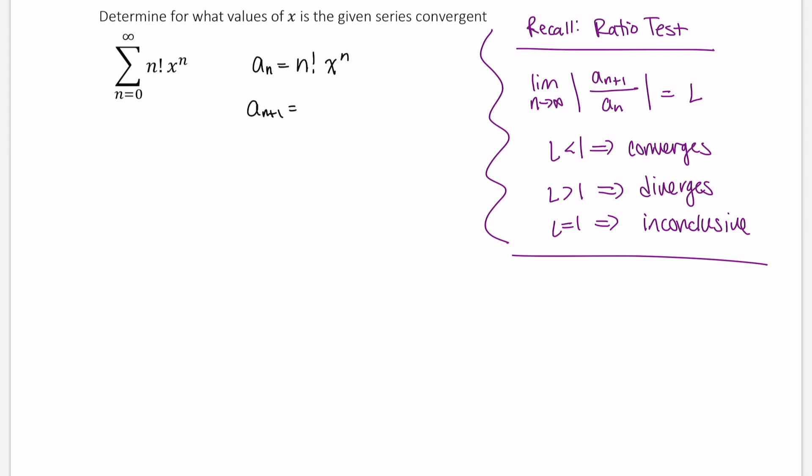The next term, the n+1 term is (n+1) factorial. Notice I'm just taking this n here, and wherever I had an n, I'm replacing it with n+1. So now I'm going to have an x, and instead of writing n here, I'm going to write n+1.